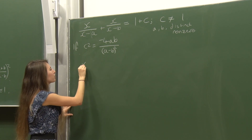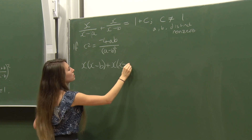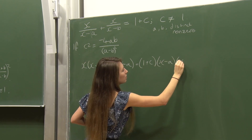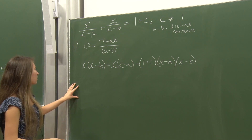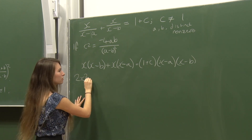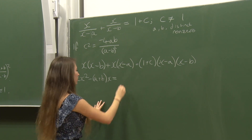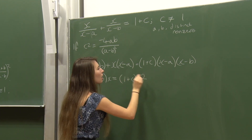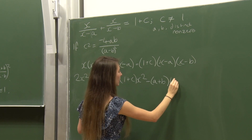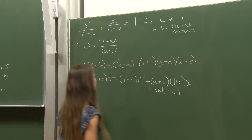Again, multiplying up as before and aiming for a quadratic, I get 2x² - bx - ax on the left, equal to (1+c)x² - (a+b)(1+c)x + ab(1+c) on the right.